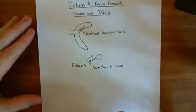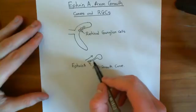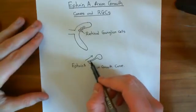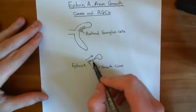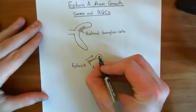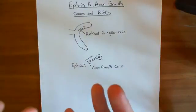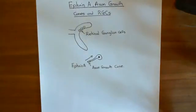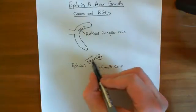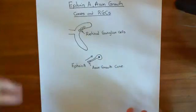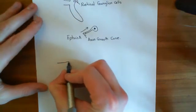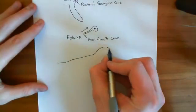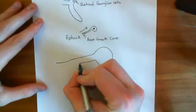These axon growth cones, whilst they are growing, will also be undergoing neuronal activity. Continually, what is happening within this axon is that it's firing. The retinal ganglion cells, whilst they grow, are not completely silent as far as electrical activity is concerned — instead they are continually firing action potentials. So if I draw it larger here, here's the axon growing, here's the nucleus of the retinal ganglion cell, and right at the end we've got this axon growth cone.